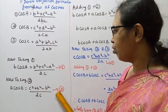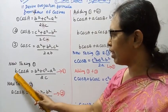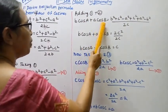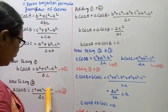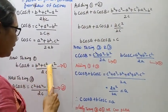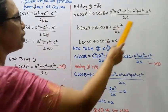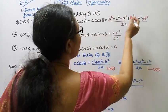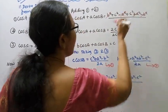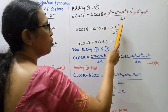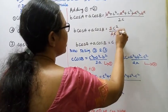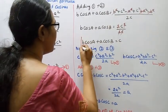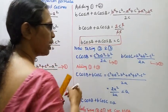Adding equations 1 and 2 from the law of cosines: b cos C + a cos B. The numerators become (b² + c² − a²) / 2c plus (c² + a² − b²) / 2c, since the denominators are the same, they cancel. We get 2c² divided by 2c, and after cancellation, c. Therefore b cos C + a cos B = c, which is the projection formula.